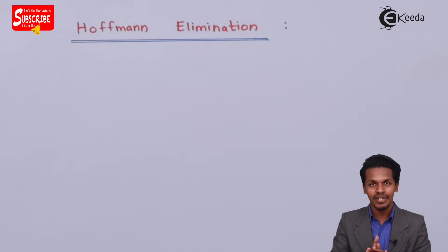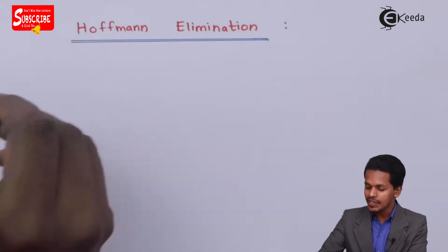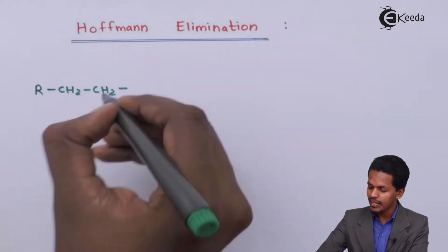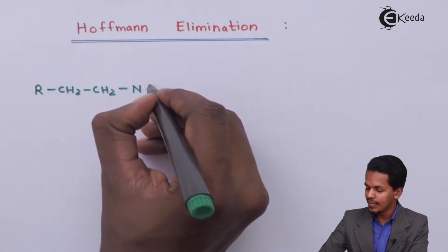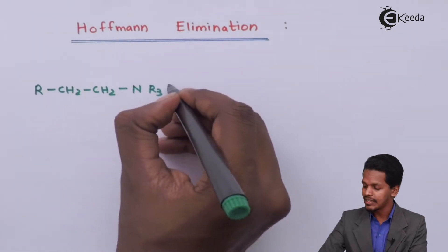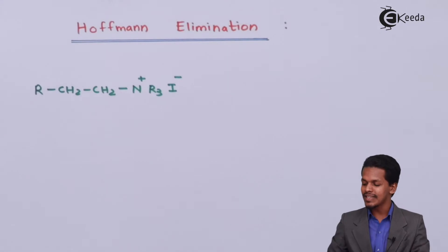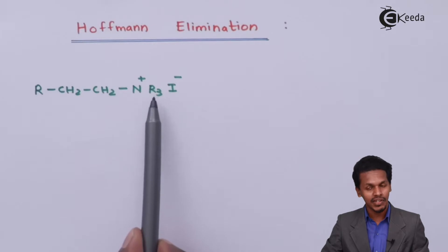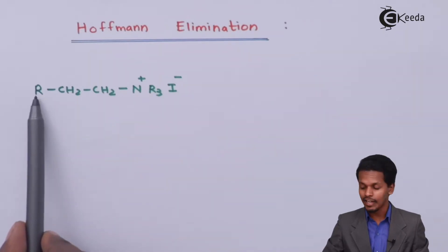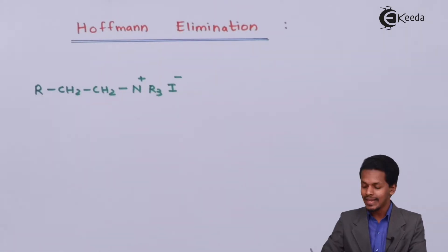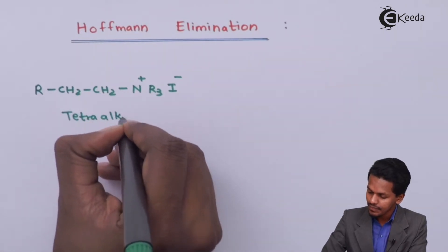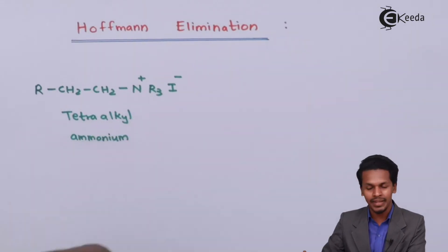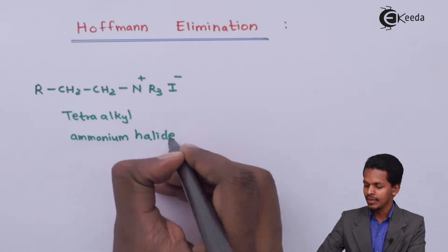For Hoffman elimination reaction, consider the reagent: CH₂CH₂ attached to nitrogen along with three R groups and a halide (I). This is an ammonium salt — specifically, because there are four alkyl groups attached to nitrogen, it is known as tetraalkyl ammonium iodide or tetraalkyl ammonium halide.